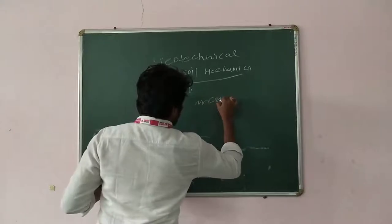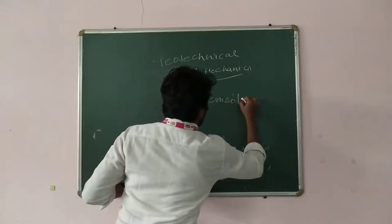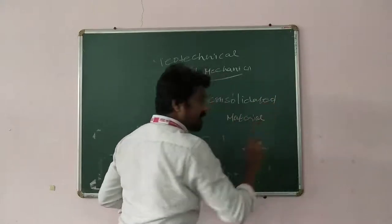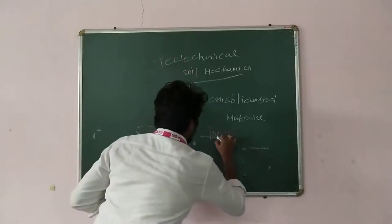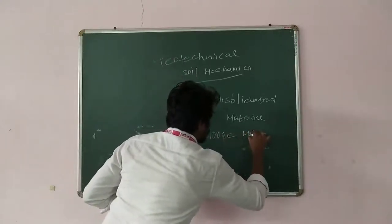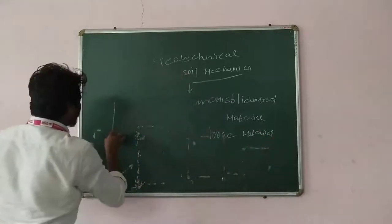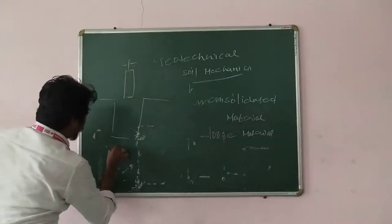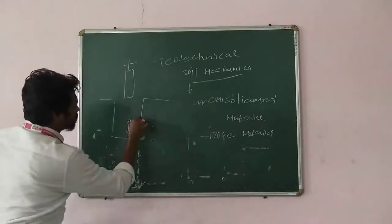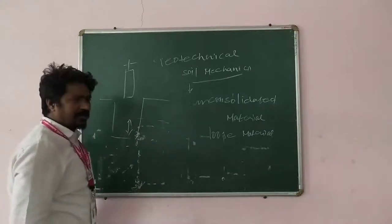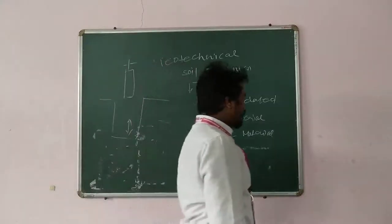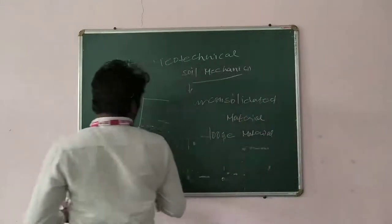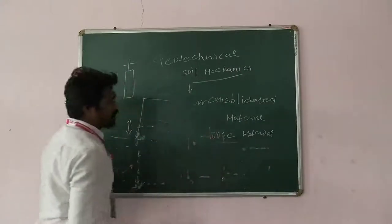Unconsolidated material means it is loose material. Suppose if you excavate — this is a ground level — and you have to design one structure above the ground level, when you excavate to 2 or 3 meters depth you will get different types of materials. You will sometimes get aggregates, boulders, rocks, soil — many types of forms. In this loose material, we cannot directly use it for construction purposes.